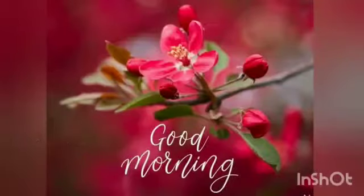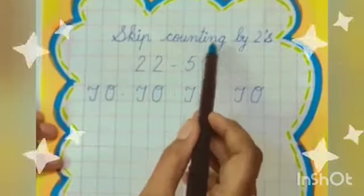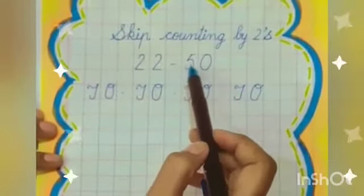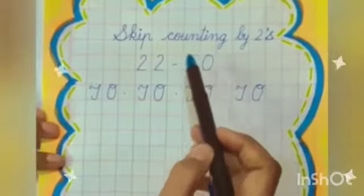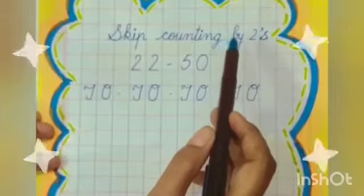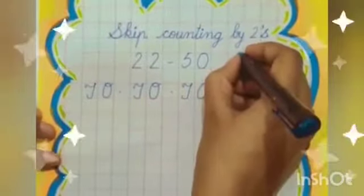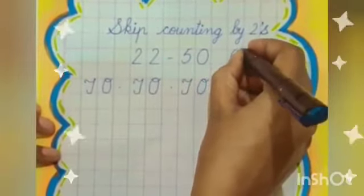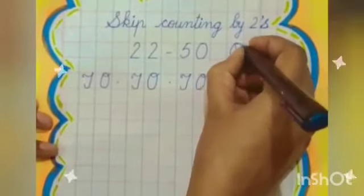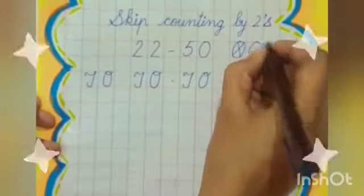Good morning my dear lovely kids. Today I will teach you skip counting by twos from 22 to 50. I will again teach you this counting through yummy laddoos. This is skip counting by twos. So I will make two laddoos. In first laddo I will put cross sign and in second laddo I will put tick sign.